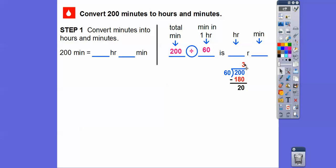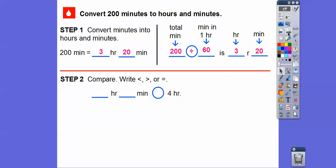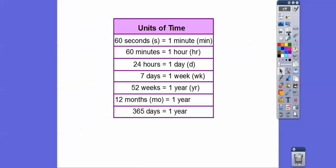So it's 3 with the remainder of 20. That tells us how many minutes. So it's 3 hours and 20 minutes. That's how many hours and minutes 200 minutes is. Now Mrs. Villegas asked us to compare that with 4 hours. So 3 hours and 20 minutes is less than 4 hours.